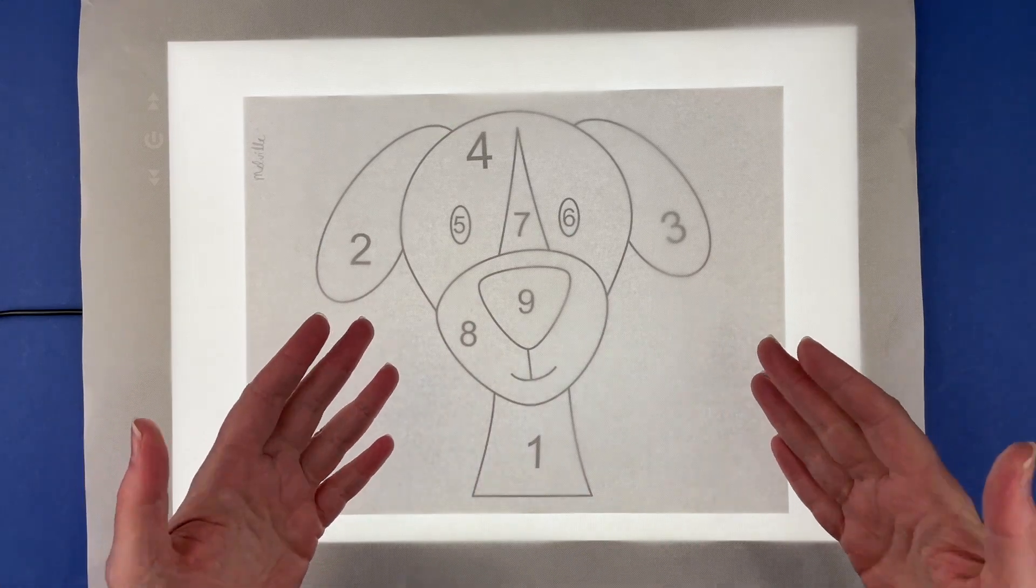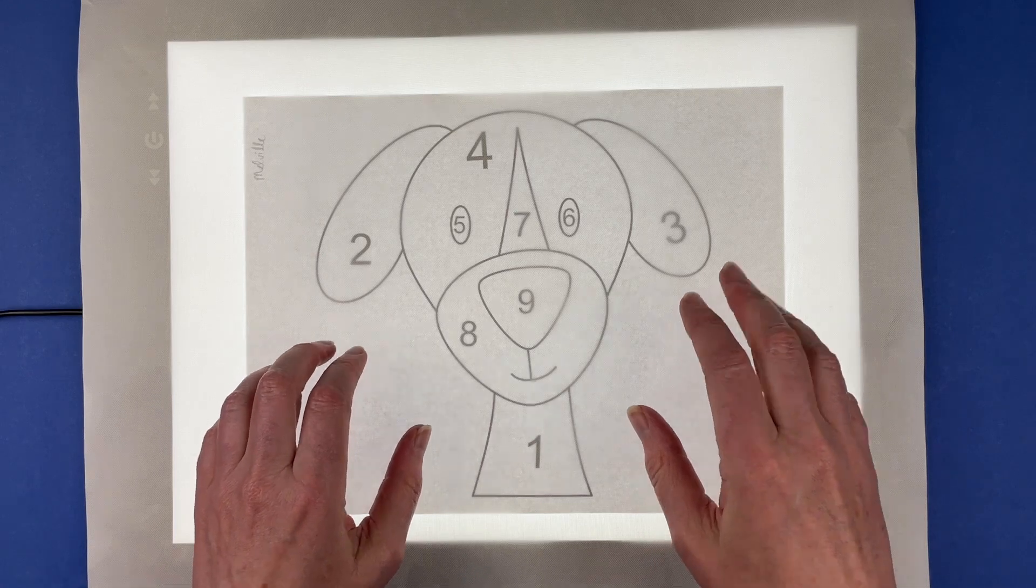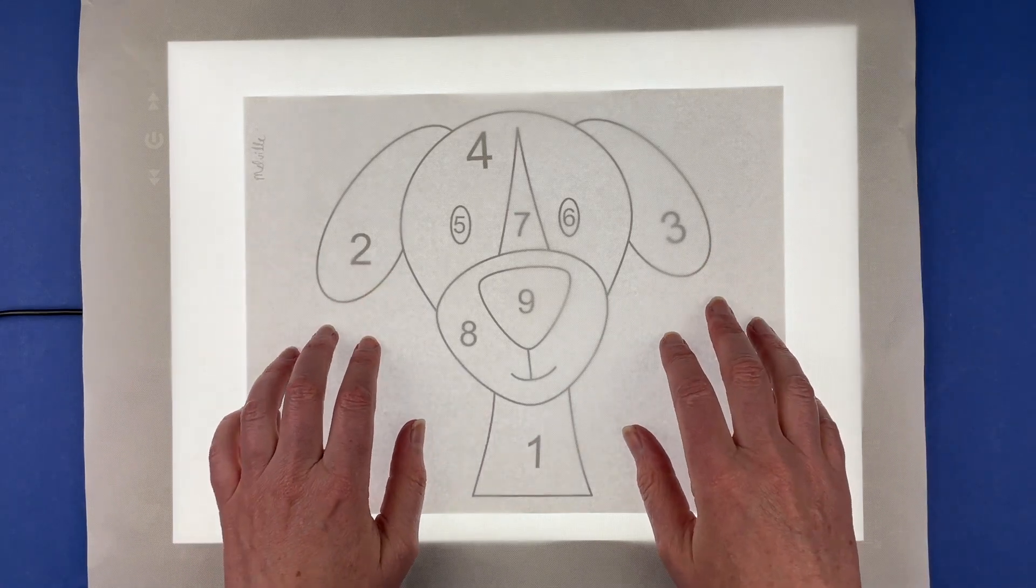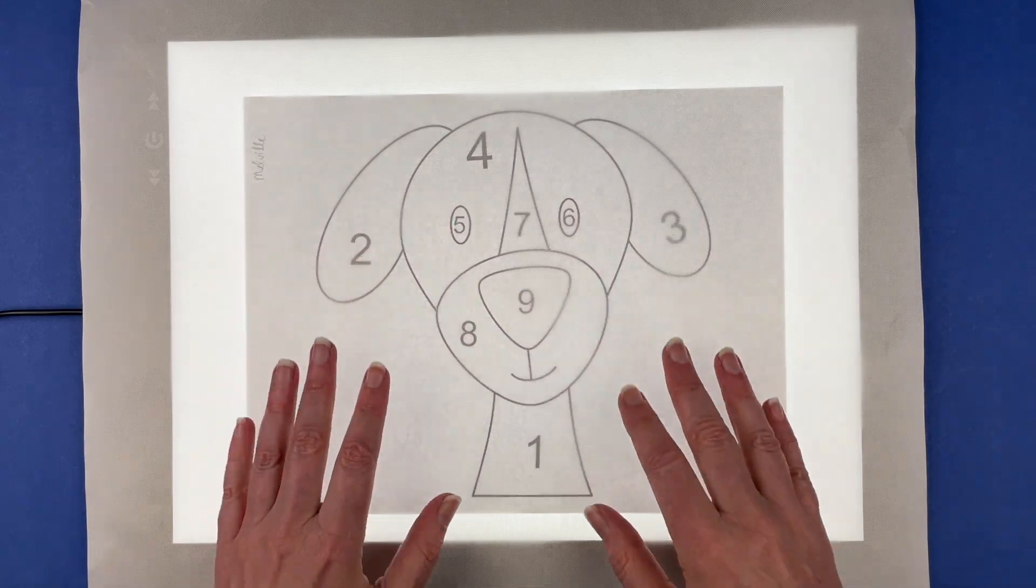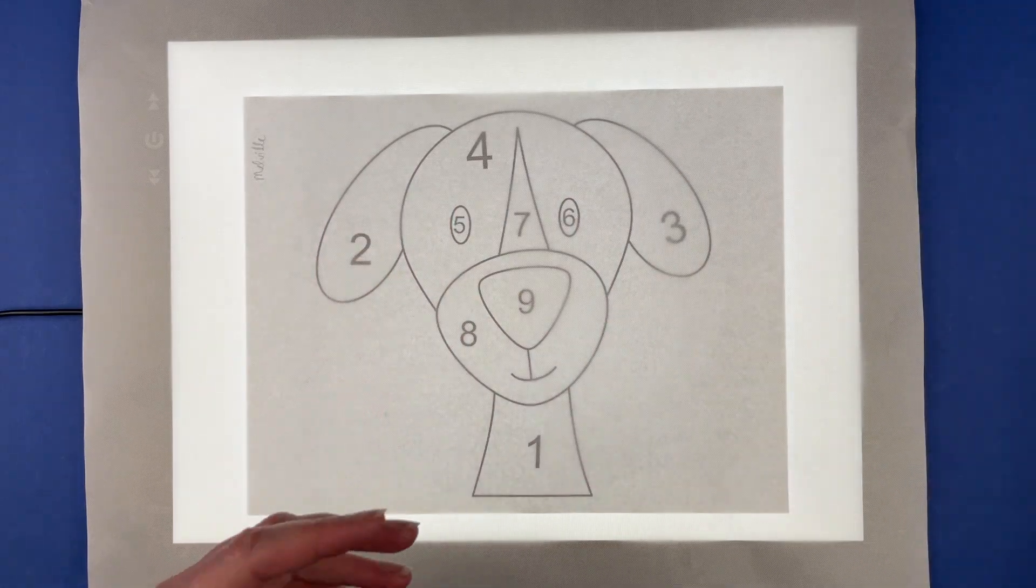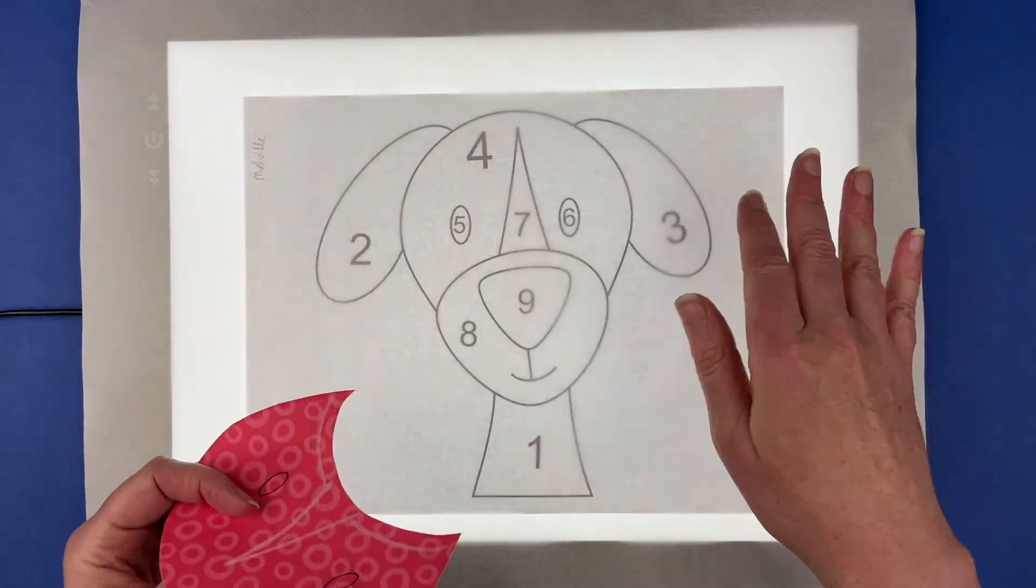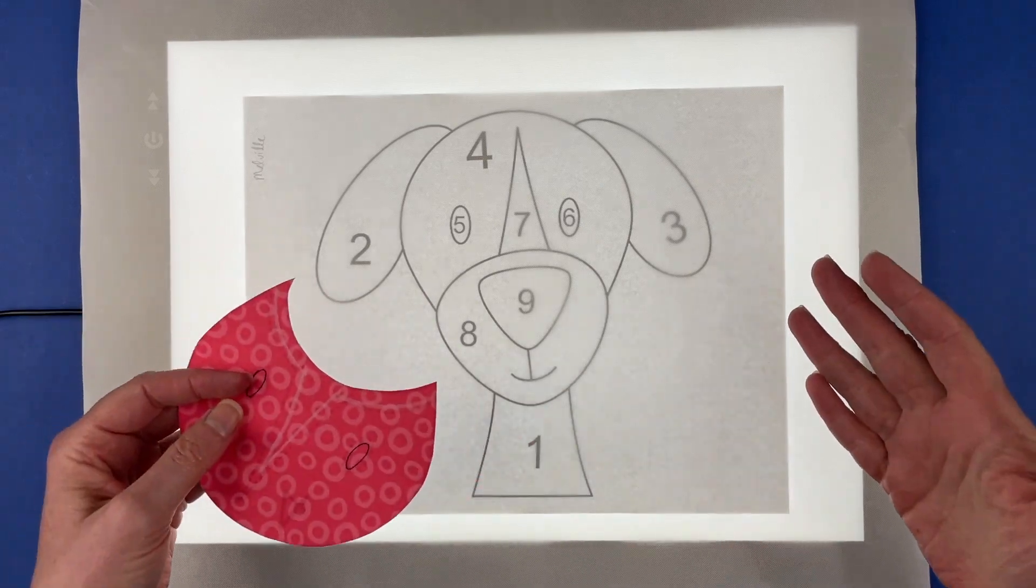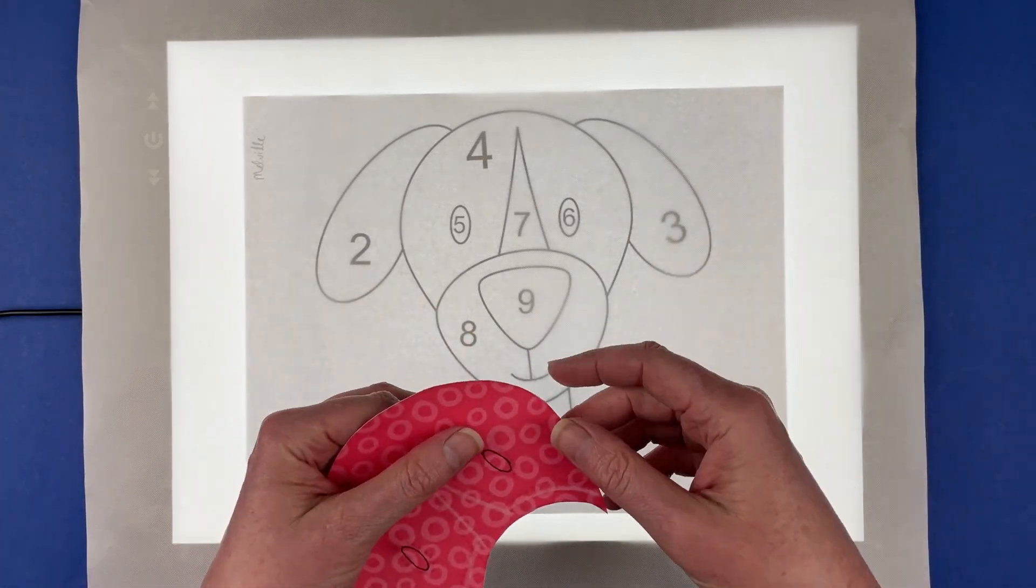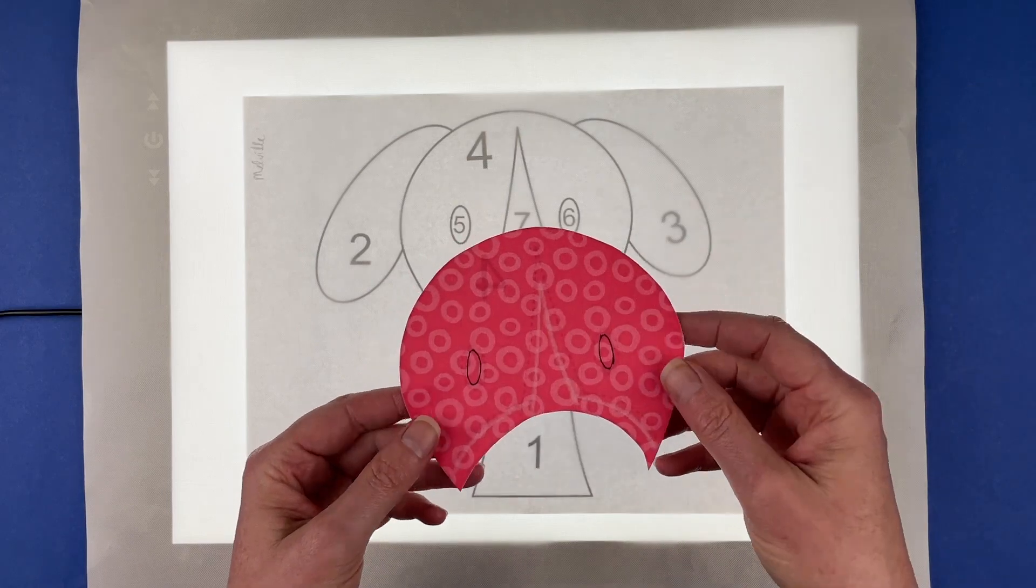A couple of things before we get started: this is the video where I'm showing you how to do this using a light box to position the pieces. I have used the same pieces in a second video showing you how to do this without a light box, so if you don't have one, you'll want to watch that other video.